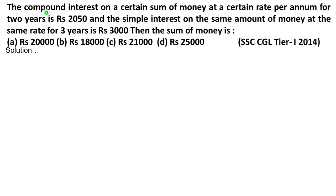Let's understand the question. First, compound interest on a certain amount at a certain rate per annum for two years is Rs 2050. This is our compound interest. And simple interest is on the same amount of money, the rate is also the same, and we're talking about three years here. The time period is three thousand. We need to find the principal amount here.